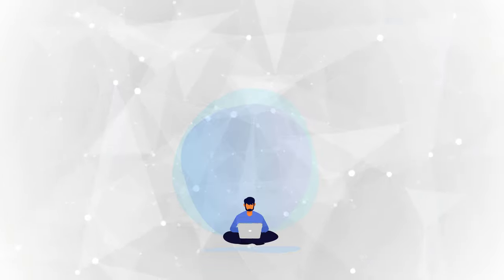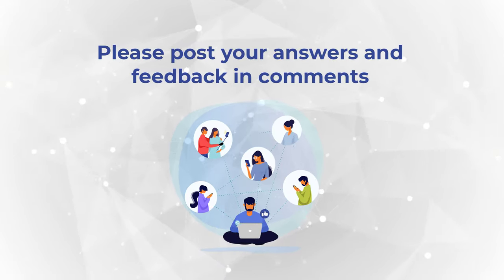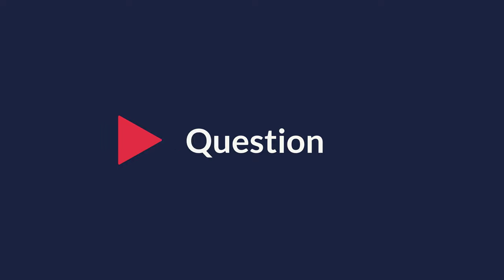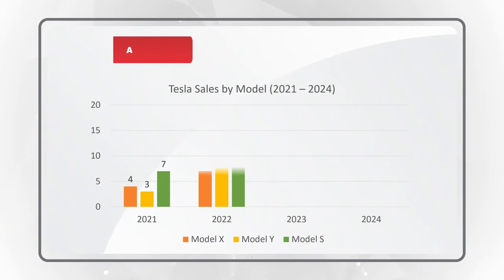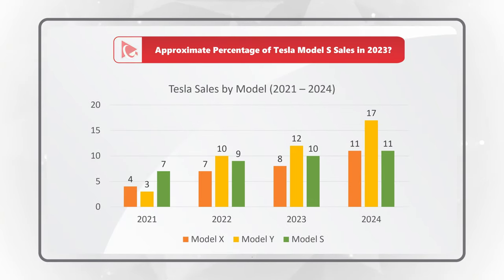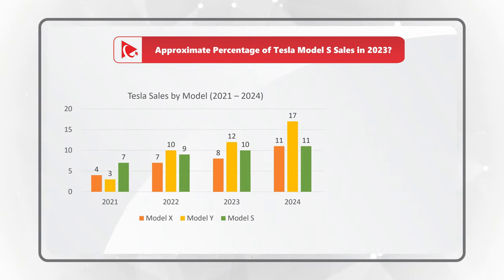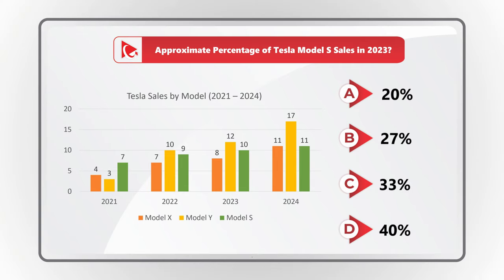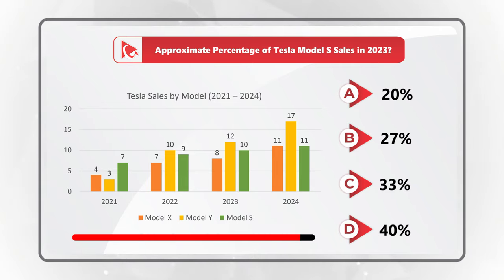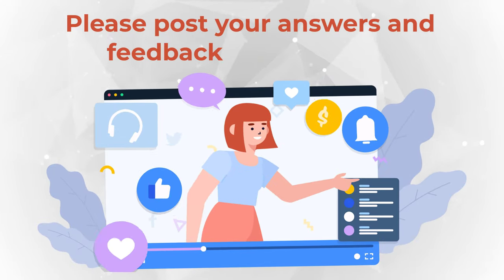Now here's a question for you to try your skills. You need to determine the approximate percentage of Tesla Model S sales in 2023. You're presented with a chart showing sales by model between 2021 and 2024. Your choices are: A) 20%, B) 27%, C) 33%, or D) 40%. Do the mental math — maybe pause this video — and post your answer in comments.